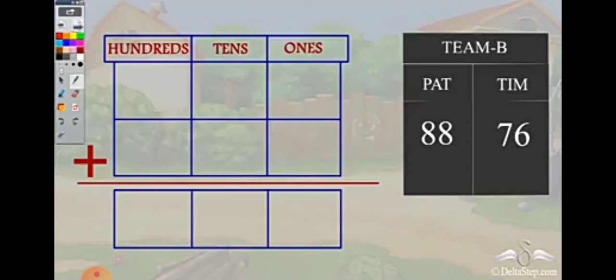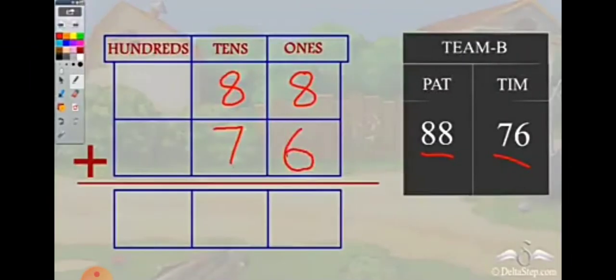For 88 plus 76, we put 8 in the ones place and 8 in the tens place, then 6 in the ones place and 7 in the tens place. Whenever we add, we always add the ones place first. So 6 plus 8 equals 14.